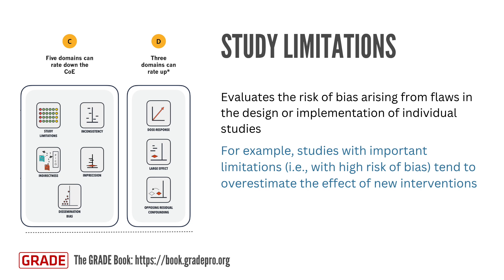The primary method for assessing study limitations involves comparing studies with high and low risk of bias through sensitivity analyses using statistical or graphical tools. However, there are scenarios where it may be necessary to rate down the certainty even when sensitivity analyses do not show apparent differences — for example, when randomization is compromised, or in unblinded studies where investigators or outcome adjudicators can realistically affect the prognosis of participants or the measurement of outcomes.